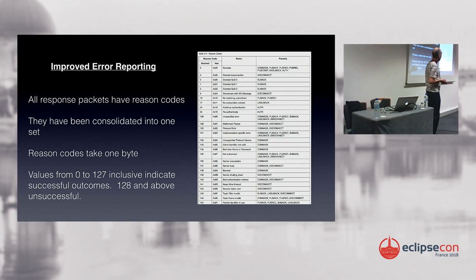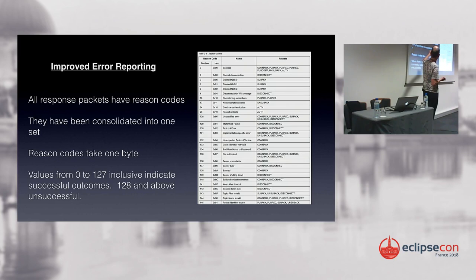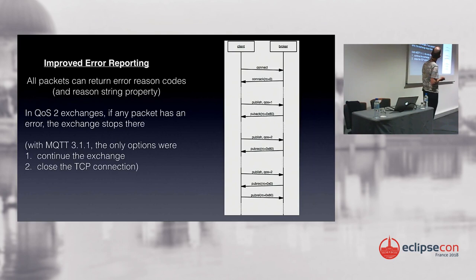For error reporting, every response packet now has a reason code, and we have a defined set of values. The server can tell the client exactly what's gone wrong with their request, and the client application can make an appropriate adjustment. It's just one byte — values below 128 mean the request worked; 128 and above means it failed, with a specific reason.